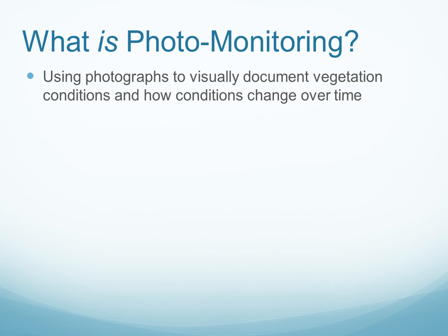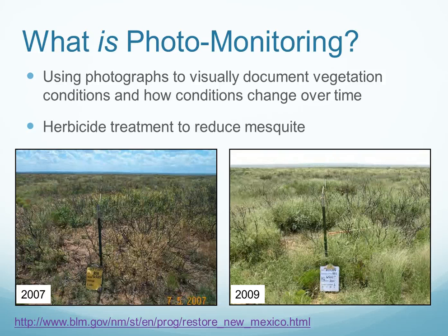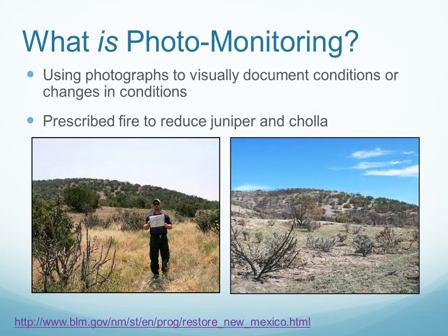There are a number of applications for photo monitoring. One is to show the effectiveness of different types of vegetation management treatments that may be implemented. For example, in this set of photographs, we can see the effectiveness of an herbicide treatment that was applied to reduce mesquite cover and to increase the cover of perennial grasses. Before and after photographs are also very helpful to show the effectiveness of prescribed fire — we can see, by comparing the two photographs, the effect of the prescribed fire that was applied to reduce juniper and cholla.